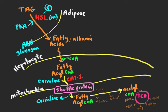What's not shown here, but also occurring, is that glycerol is released as well. Remember, triglycerides have a glycerol backbone. That glycerol can go into the blood, be taken up by the hepatocyte, and be used for gluconeogenesis and some other things. We'll focus on the fatty acids here.